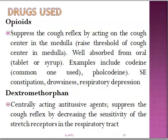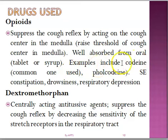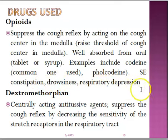In management of cough, the common agents are opiates, which suppress the cough reflex by acting on the cough center in the medulla, raising the threshold for cough. Available as tablets, the common one is codeine. Morphine can be used in cases of cancer. Common side effects include constipation, dizziness, and sometimes respiratory depression.